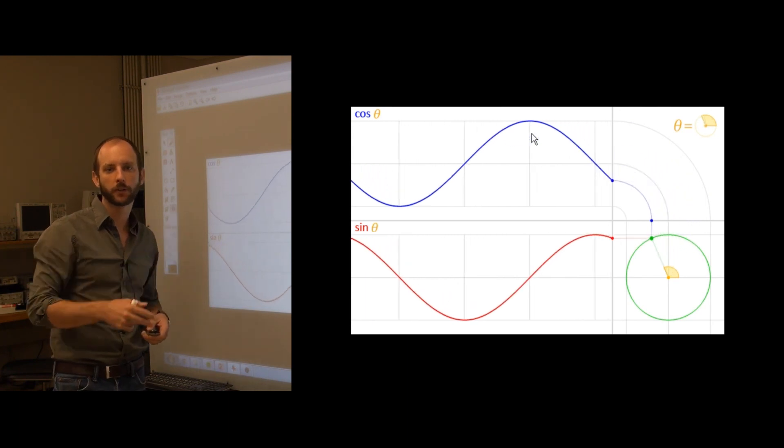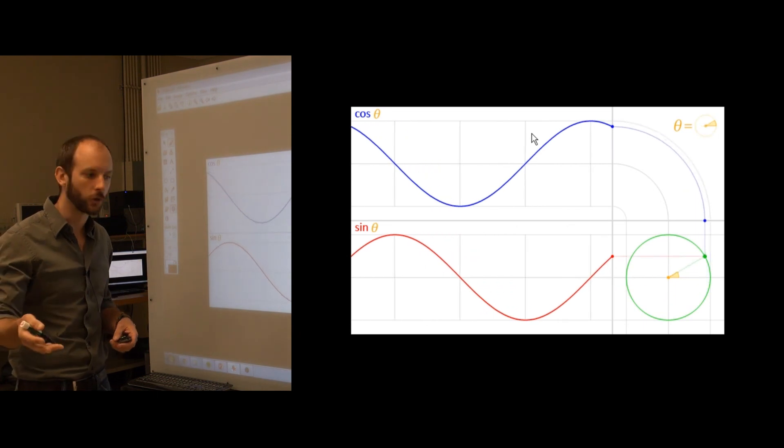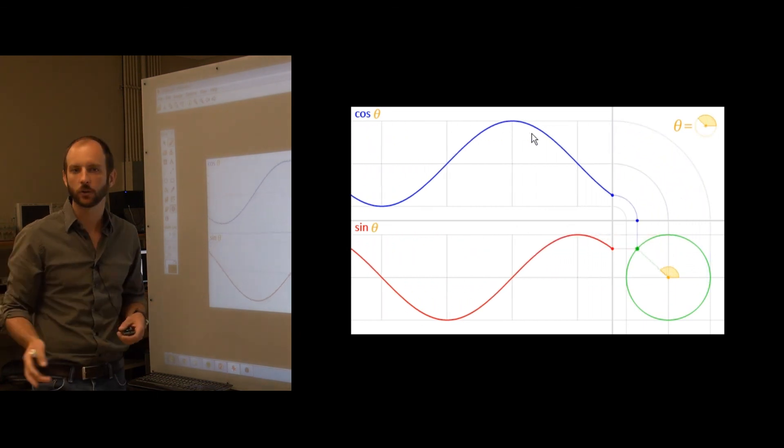Notice that in both of these plots, the arguments or inputs into the trigonometric functions are in terms of an angle. We talked about a cosine of an angle, a sine of an angle.